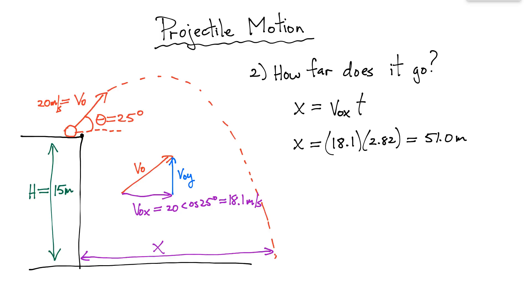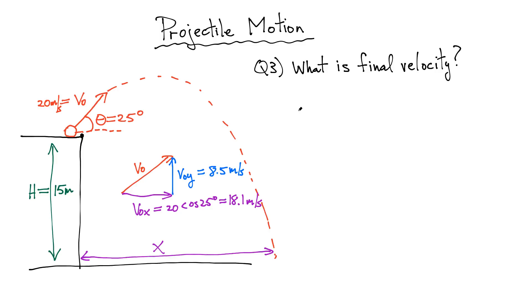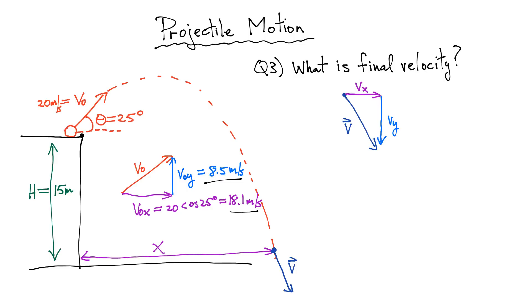The final question is what's the final velocity — the instant before the projectile hits the ground? It has two components. Since there's no acceleration in the x direction, the final x component of velocity is simply the initial x component: 18.1 meters per second.